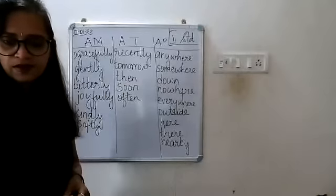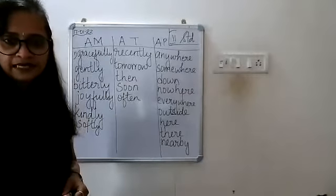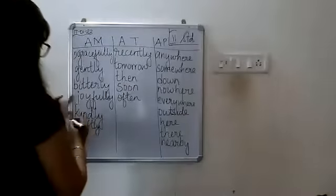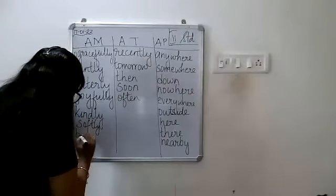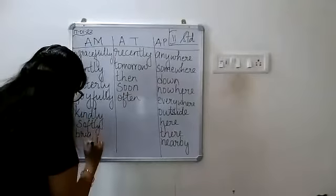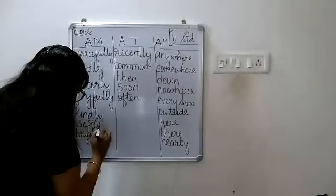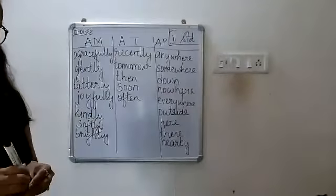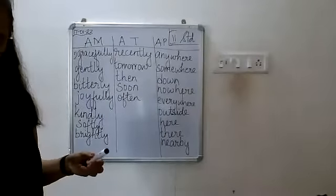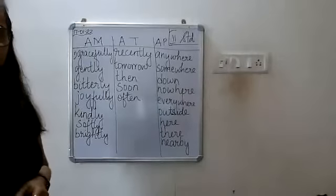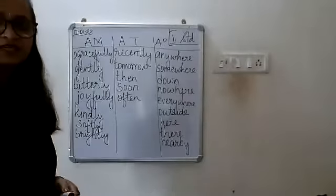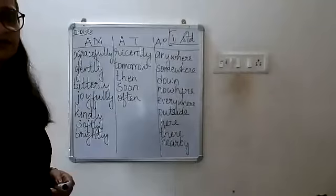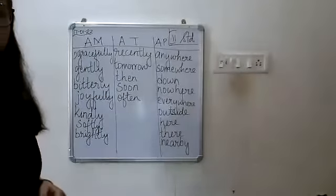Next word 'brightly' — adverb of manner, very good. Write B-R-I-G-H-T-L-Y in the manner column. Then 'brilliantly' — also adverb of manner. Write B-R-I-L-L-I-A-N-T-L-Y below 'brightly.'